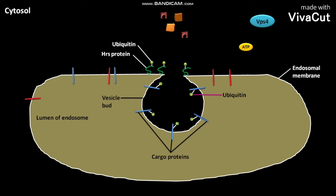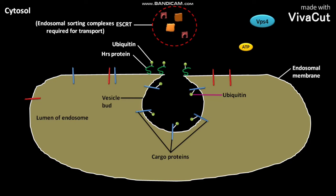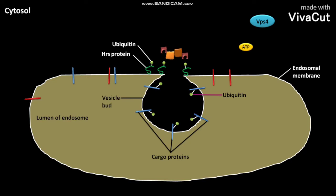In the cytosol, ESCRT proteins are present. ESCRT stands for endosomal sorting complexes required for transport. The ubiquitinated HRS protein then recruits ESCRT to the endosomal membrane.